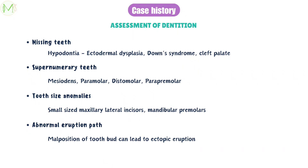Initially, we need to check for the number of teeth present inside the oral cavity and make a note of it. Next, we need to look for unerupted teeth. Note that unerupted teeth and missing teeth are different — unerupted teeth have not been seen before, but missing teeth were once visible in the oral cavity but are now missing due to extraction from caries or trauma. Missing teeth can also result from hypodontia caused by ectodermal dysplasia, Down syndrome, and cleft palate. We need to check for supernumerary teeth like mesiodens, paramolar, distomolar, and parapremolar.